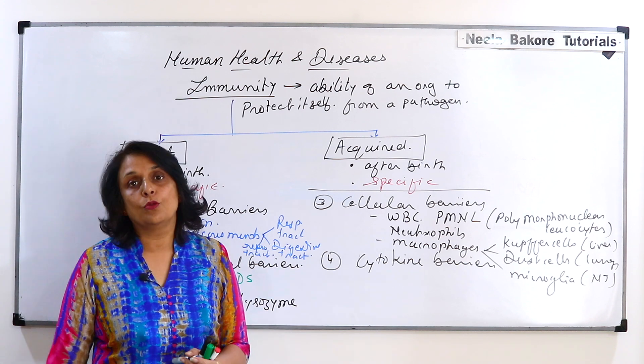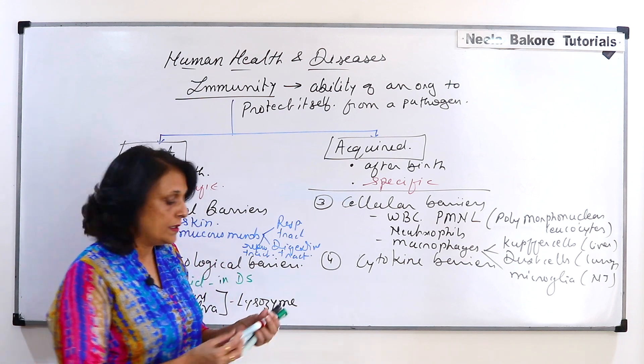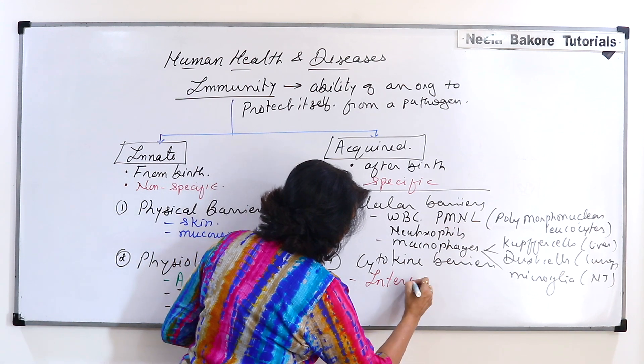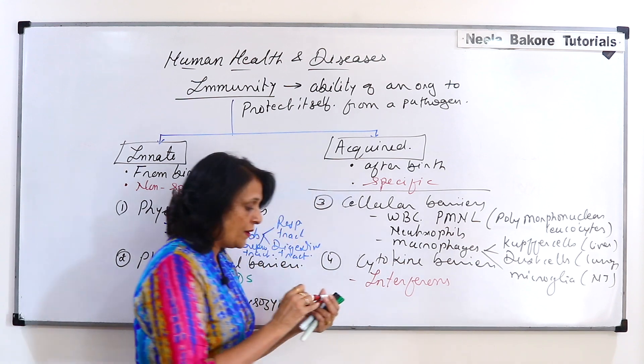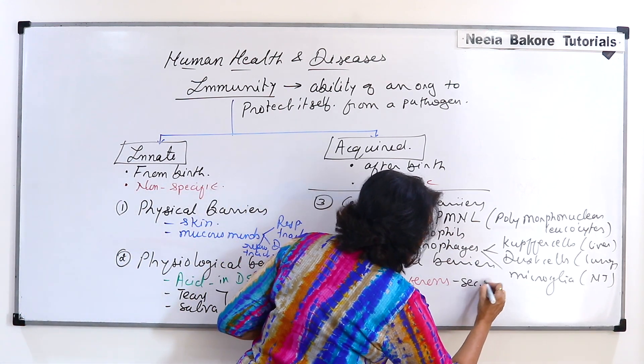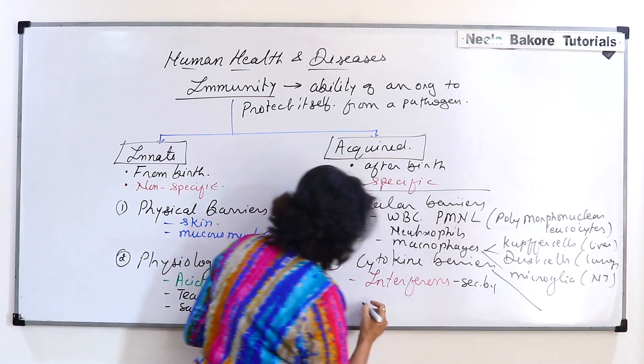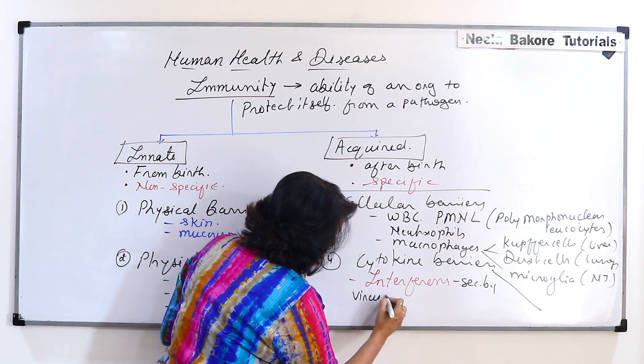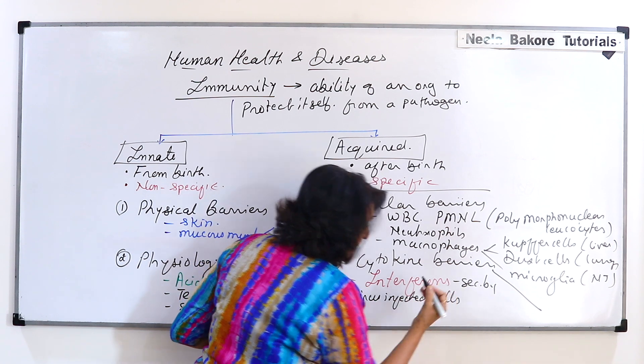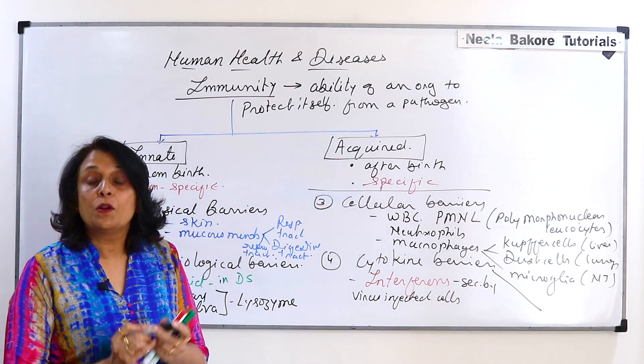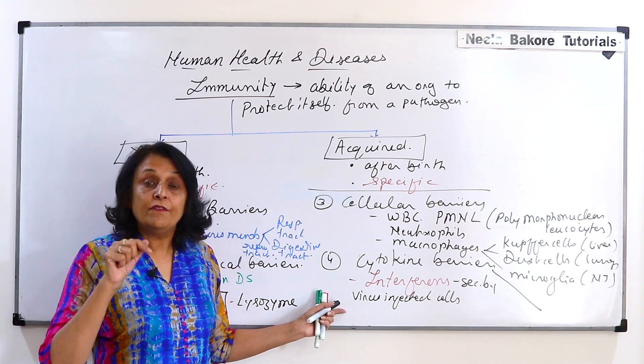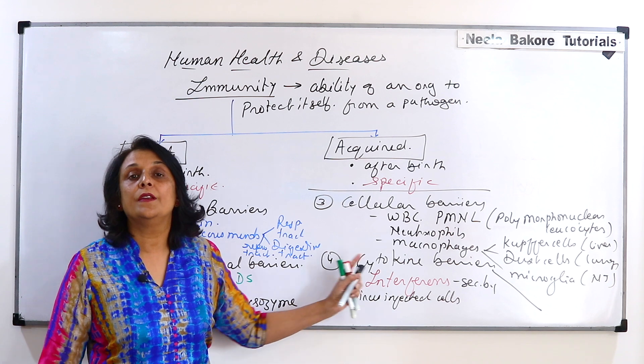And the fourth is cytokine barriers. Now here there is a substance which is called interferon. Interferons are proteins. They are secreted by virus infected cells. So if a cell of our body gets infected by a virus, then that infected cell is going to secrete interferon.